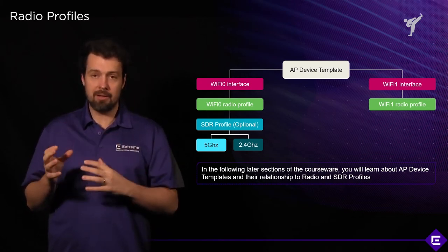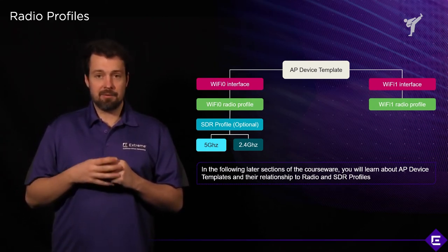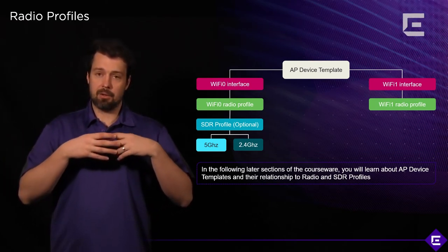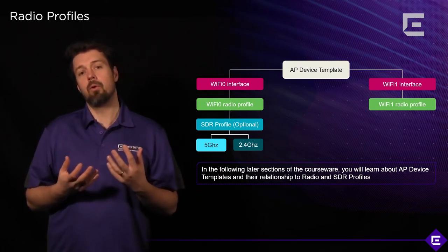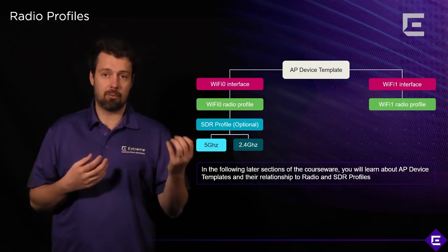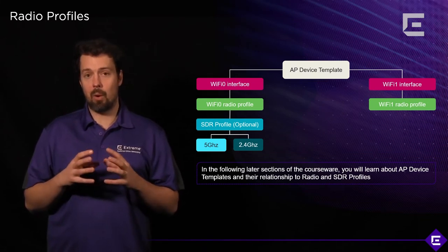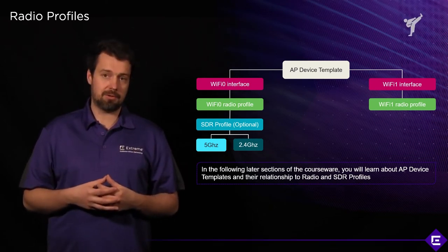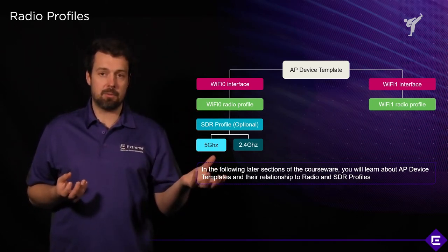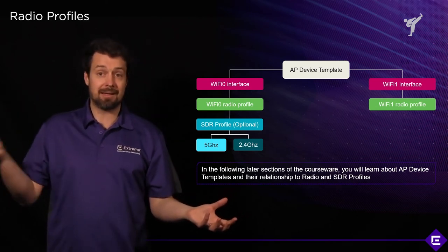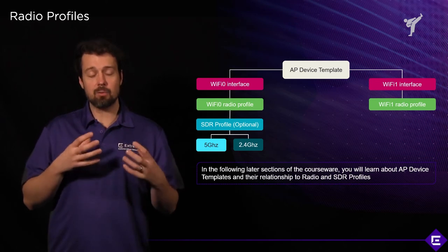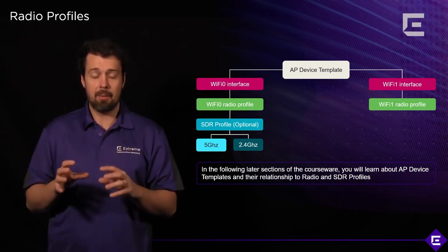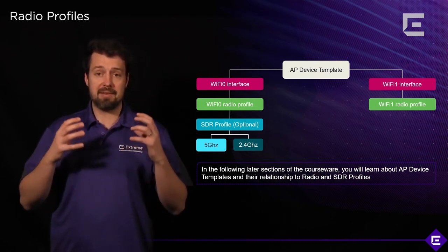The Wi-Fi 0 interface is the 2.4 GHz or software-selectable radio, while Wi-Fi 1 is always the fixed 5 GHz radio. For Wi-Fi 1, you only have one option: assign the corresponding radio profile. For Wi-Fi 0 there is more flexibility — you can assign a radio profile for static 2.4 or static 5 GHz mode, or for dynamic assignment you use an SDR profile, a software-defined radio profile.